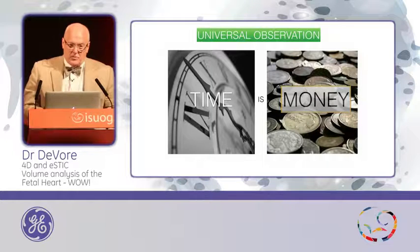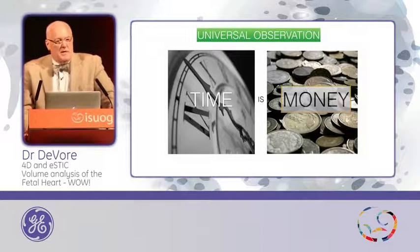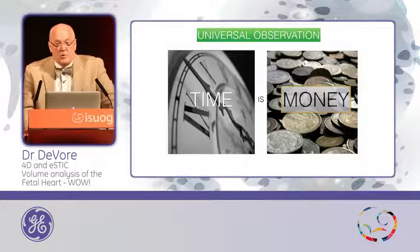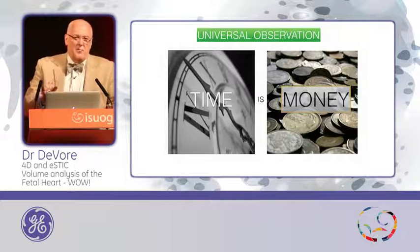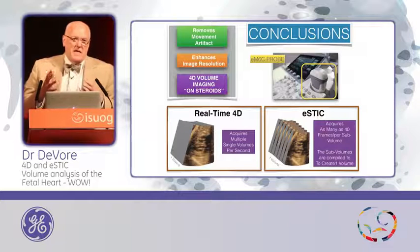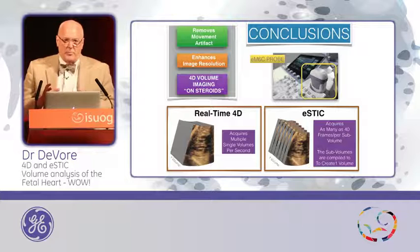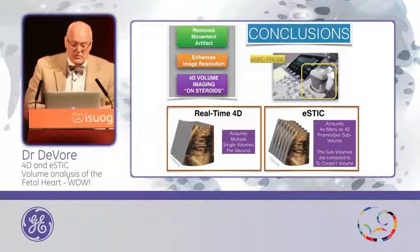In closing, a universal observation: time is money. If I spend more time struggling with tools or trying to acquire better images during a heart study, it takes longer, I see fewer patients, or I go home later. If I have a tool that saves me time, it saves me money. With this technology: it saves me time, it gives me a higher quality image, I can use it as a better diagnostic tool especially in the B and C planes, and I can use all the tools more efficiently and effectively. The summary: it removes artifact we've seen so much with STIC, it enhances image resolution because of the qualities of the probe, and it really is 4D volume imaging on steroids. Thank you very much.